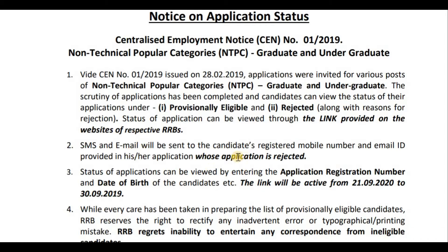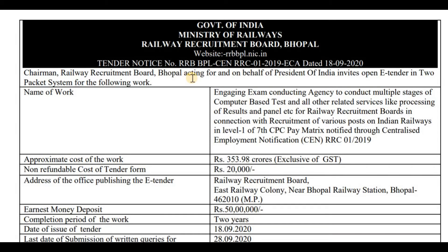For more information, please refer to the email provided. The application status link is available. When you click the link, you will need your registration number and date of birth to check your status. If your application is rejected, you will receive an SMS and email notification to your registered mobile number and email ID. The application status process is clear.